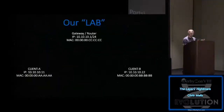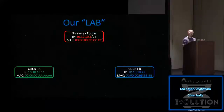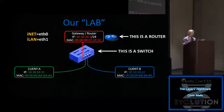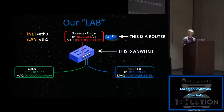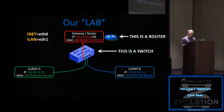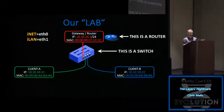We'll build a really simple lab — we'll have a router, Client A, and Client B. You'll see iNet and iLan in the slides. iNet is essentially your eth0, which connects to your ISP, and iLan is your internal interface which connects to your switch.